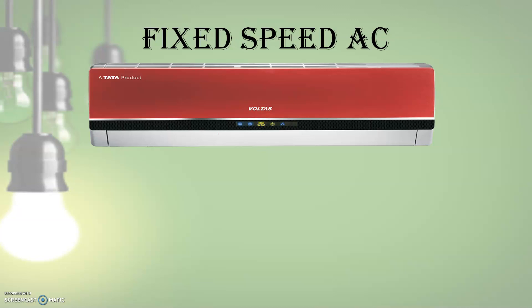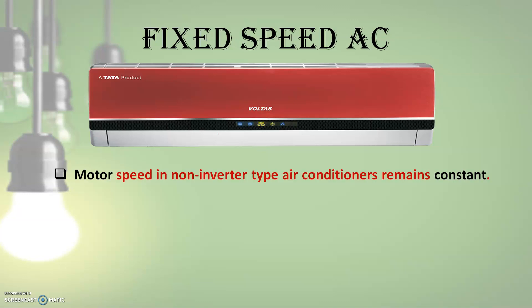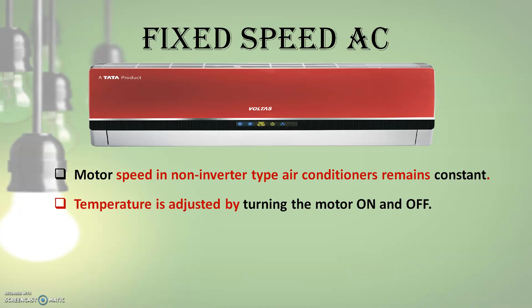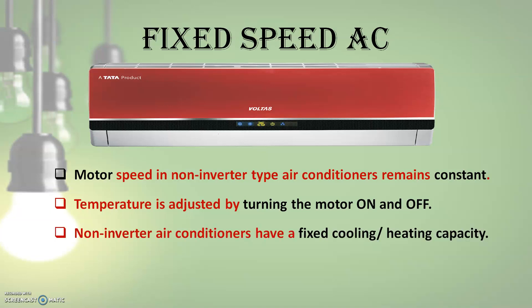In a fixed speed or non-inverter type air conditioner, the motor speed remains constant and temperature is adjusted by turning the compressor on and off, which consumes more energy. In other words, non-inverter type air conditioners have fixed cooling or heating capacity and can only control the indoor temperature by starting and stopping their compressor motor.